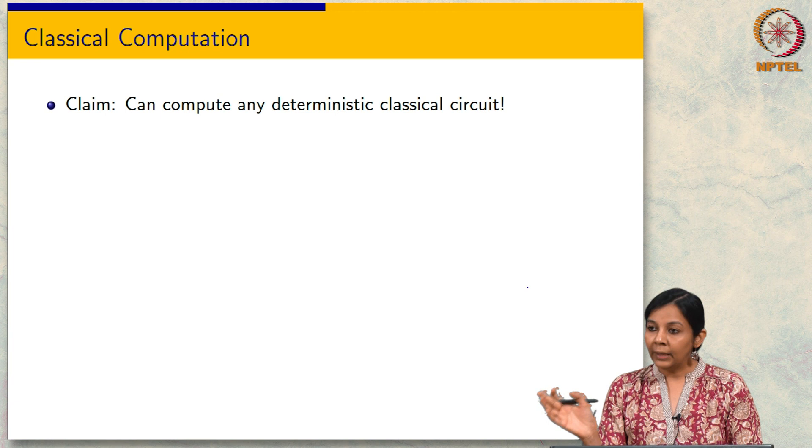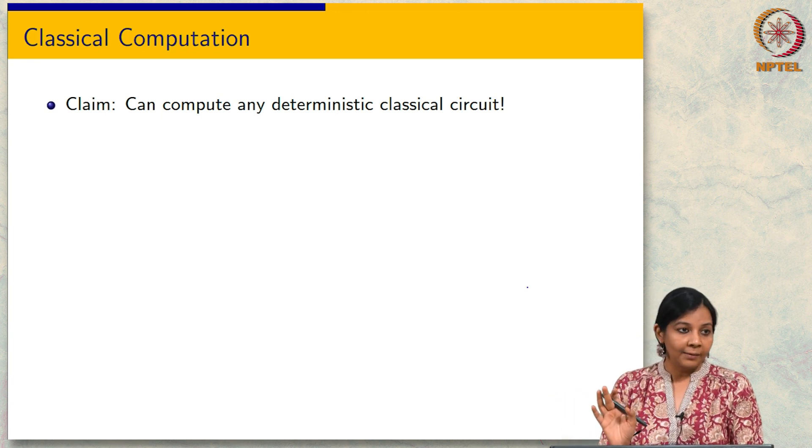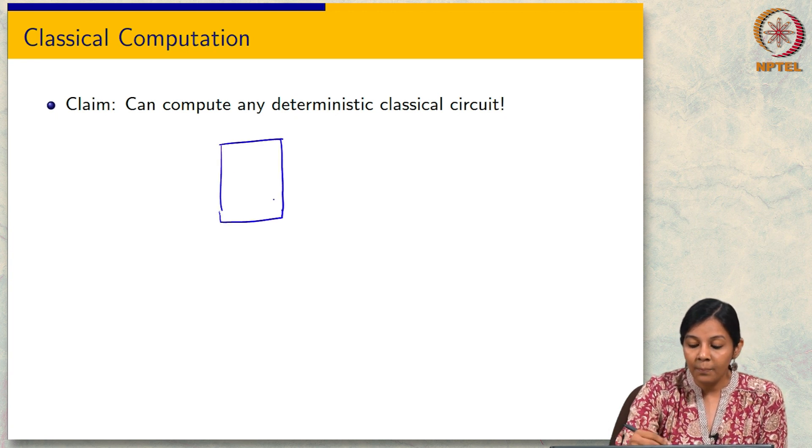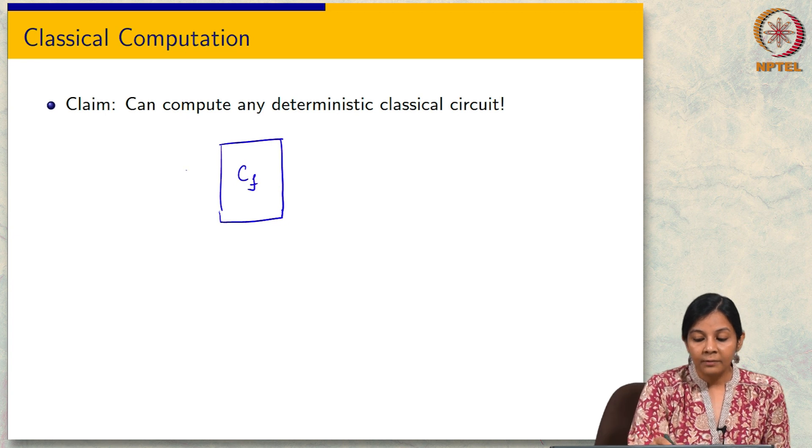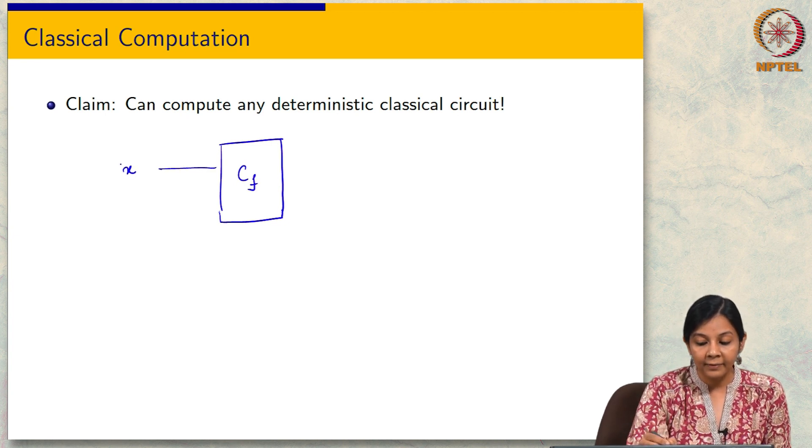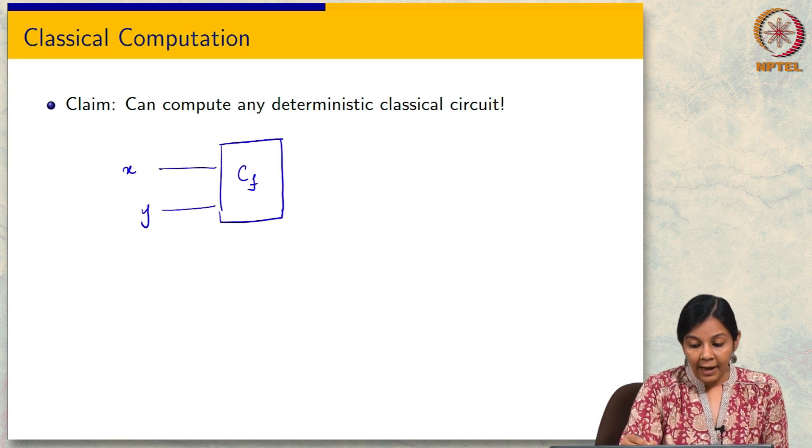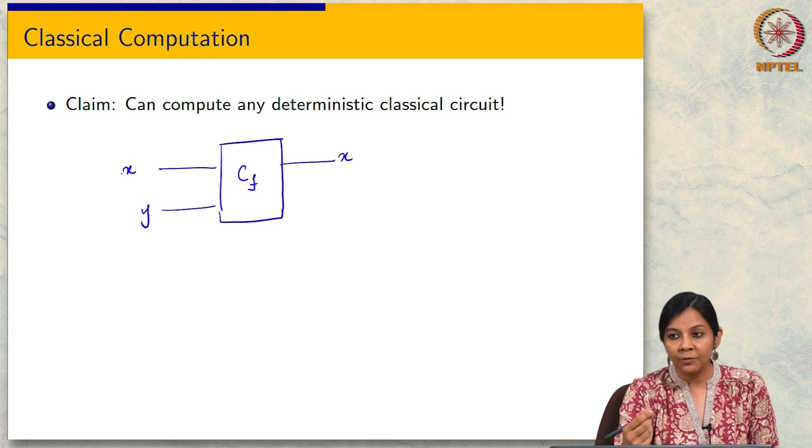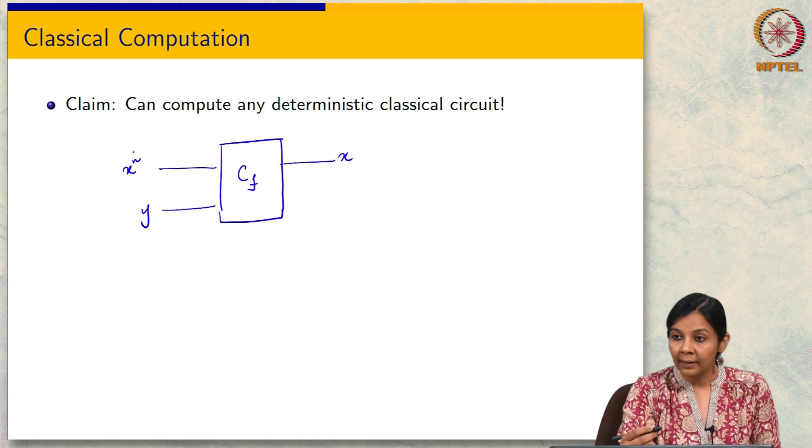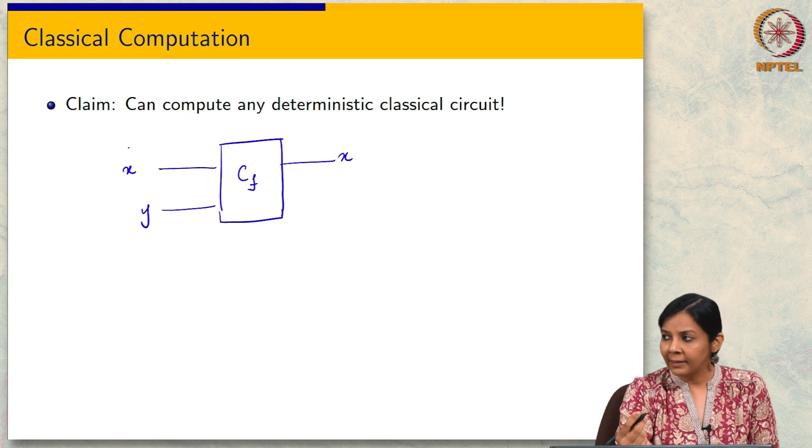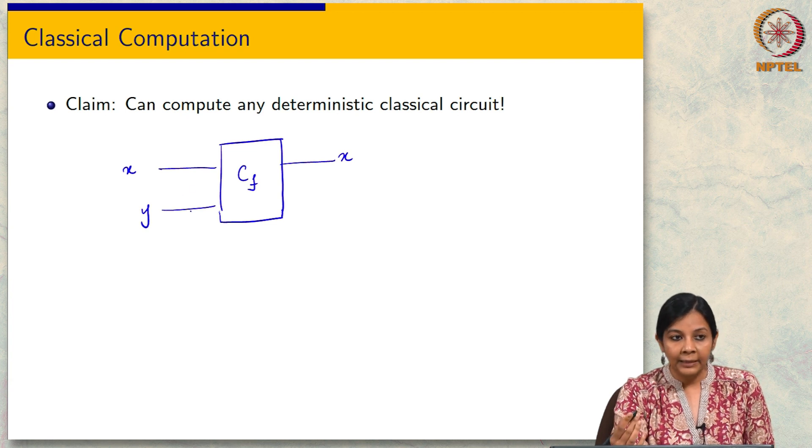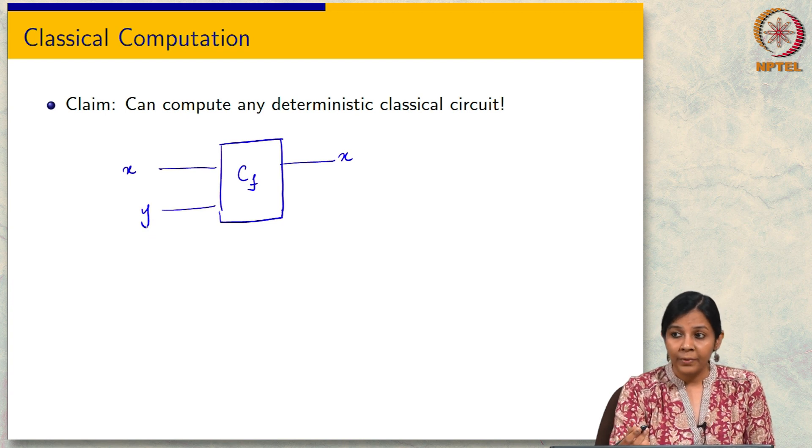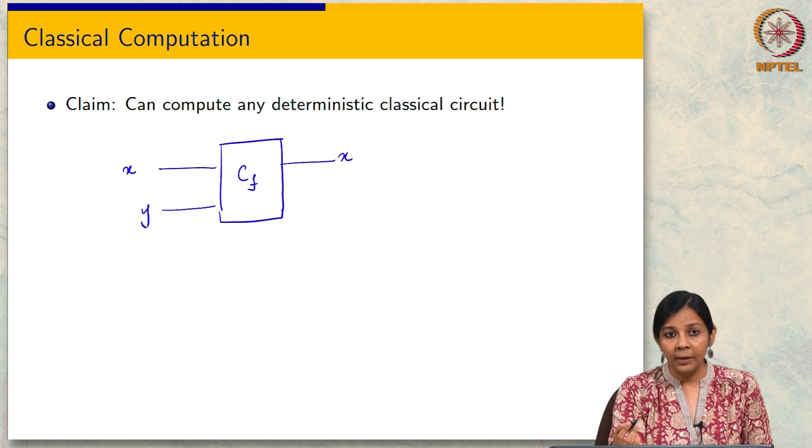Now, we are ready to claim that we can compute any classical circuit and the schematic that we have generally for this is we draw a box. Our function C_f is sitting here. We have our x here, we have some y here. This x could be n bits or whatever. x and y could be of any length; the size of y and f(x) needs to be the same.